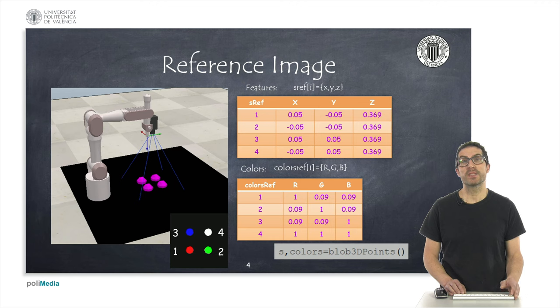or to use the function block3dPoints on every simulation step. And this is a function that I explained in the previous video, that will return a list of features and a list of colors of the features.